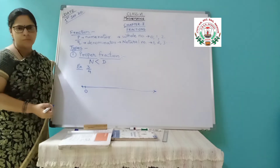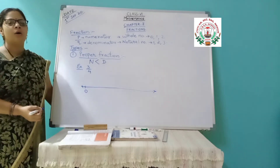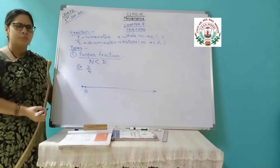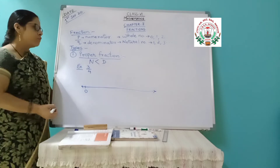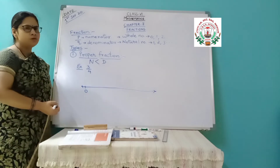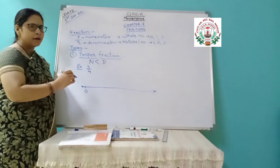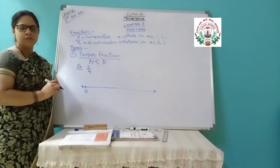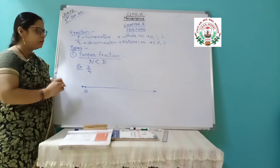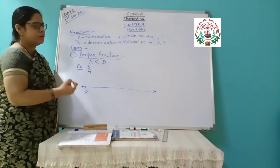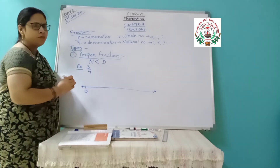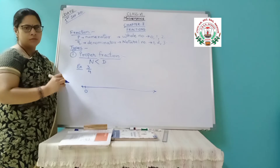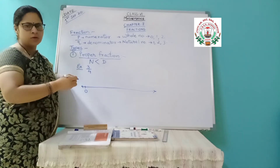For example, 3 by 4. Now we will see how to denote this proper fraction on the number line. For this we should know how many divisions or how many parts we have to take in between numbers. How will we come to understand between which two numbers this fraction lies? And how many equal parts to mark between them.